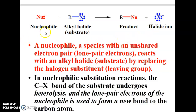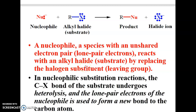A nucleophile is a species with an unshared electron pair — lone pair electrons — that reacts with an alkyl halide substrate by replacing halogen substituents, or leaving groups.